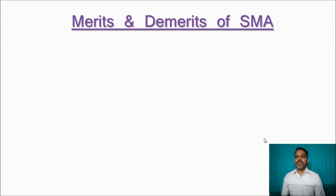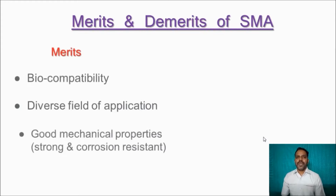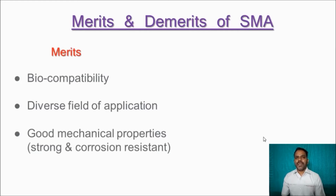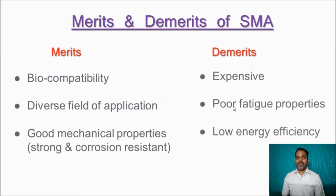Merits and demerits of shape memory alloys. Merits include: biocompatibility, diverse fields of application such as automobile, medical, and engineering fields, good mechanical properties, and strong corrosion resistance. Demerits include: expensive material cost, fatigue properties — applying stress very often may cause breakage — and low energy efficiency.